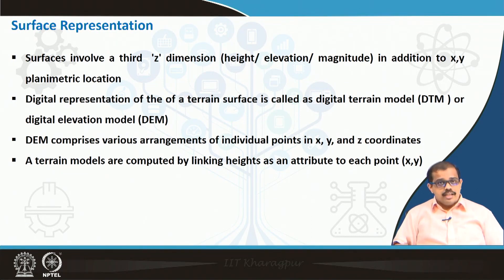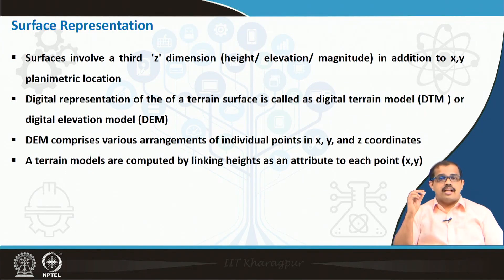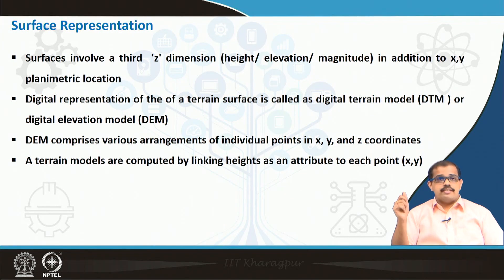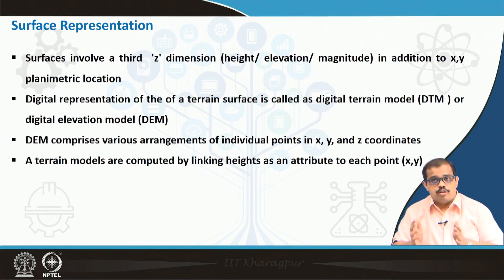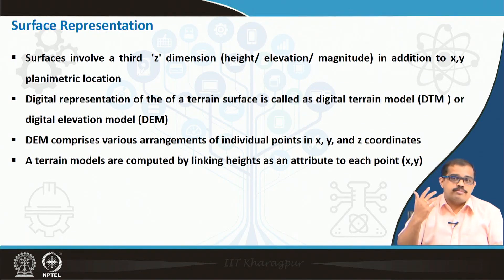So if you have only x and y, then it becomes planimetric and it is extremely difficult to represent a surface. When you are looking at a digital representation of any terrain surface, it is called a digital terrain model, very frequently called a DTM, or digital elevation model. A digital elevation model comprises various arrangements of individual points in x, y, and z coordinates. If it is only x and y it is planimetric, whereas if you have a z coordinate it becomes a surface because it is giving height, elevation, or magnitude.